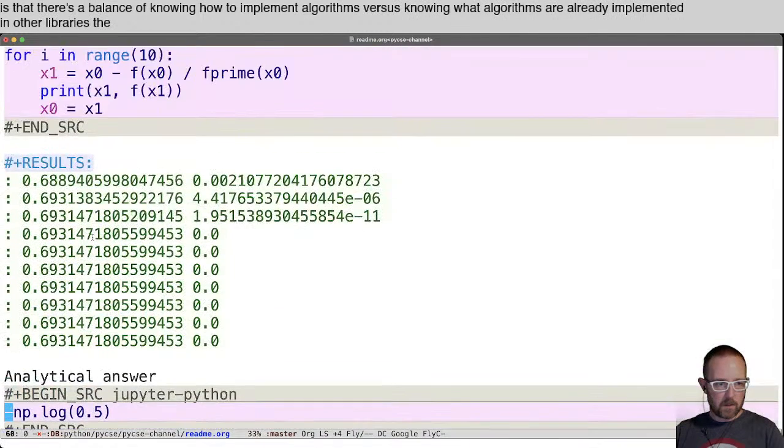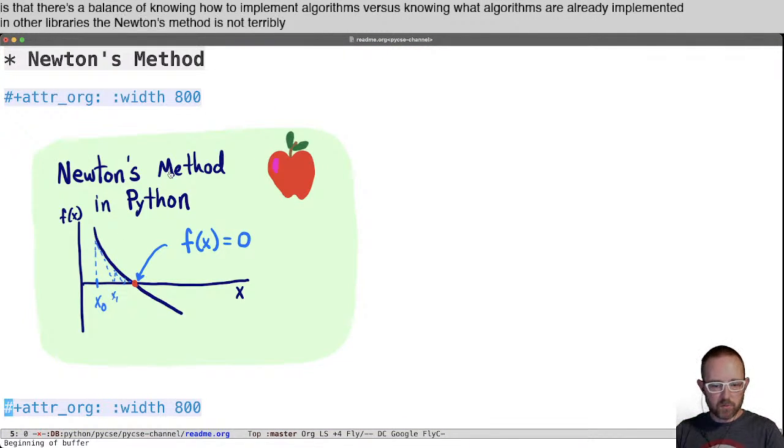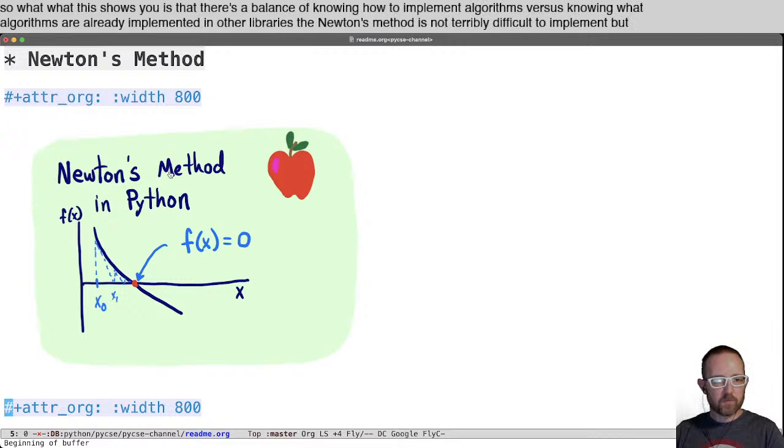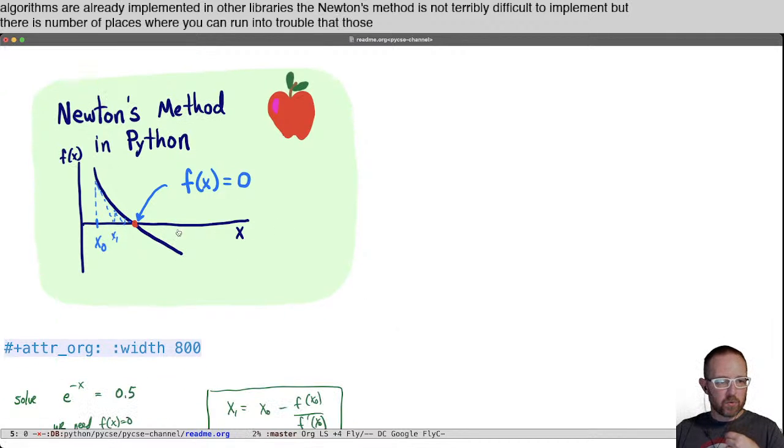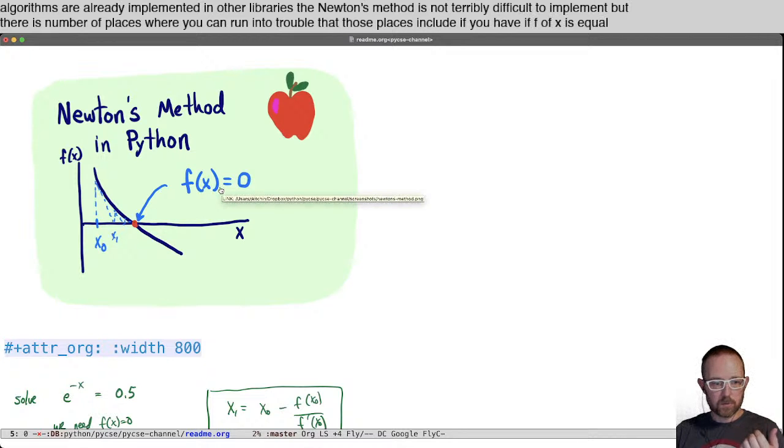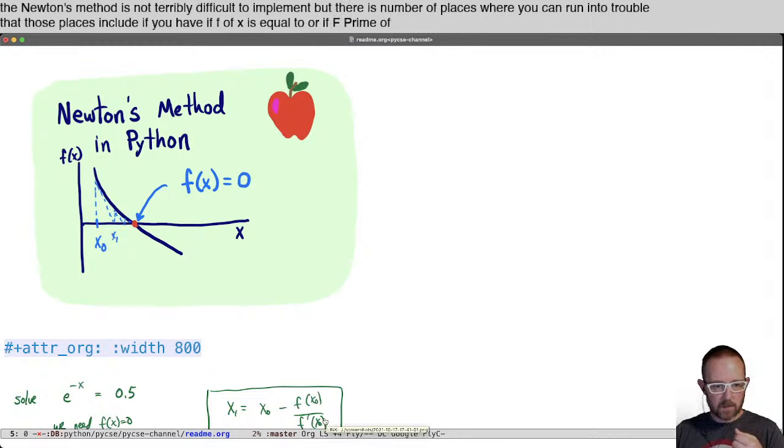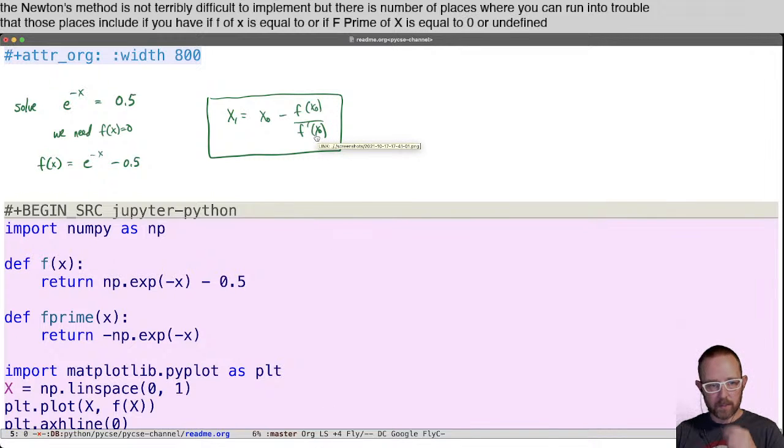So what this shows you is that there's a balance of knowing how to implement algorithms versus knowing what algorithms are already implemented in other libraries. The Newton's method is not terribly difficult to implement, but there are a number of places where you can run into trouble. That those places include if you have, if f of x is equal to, or if f prime of x is equal to zero or undefined at your initial guess.